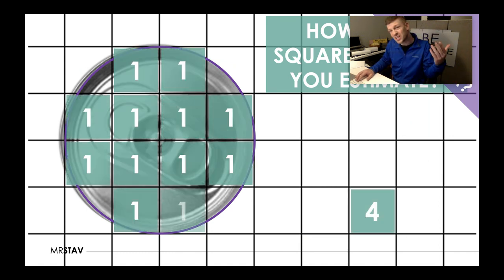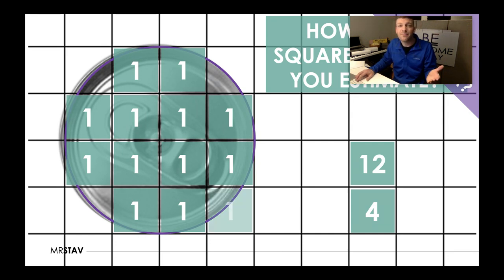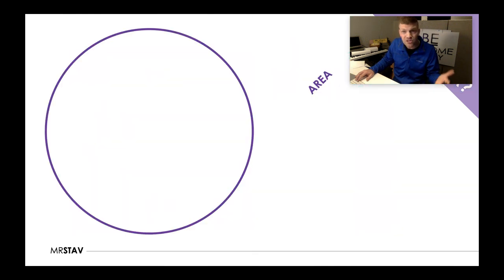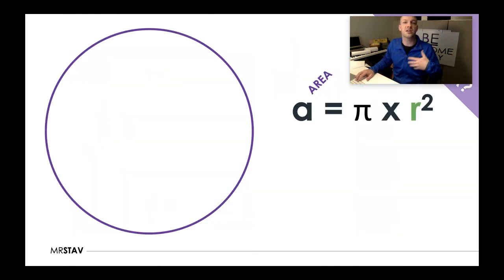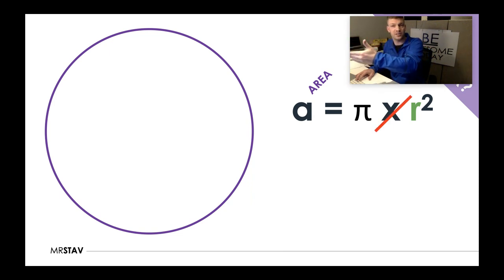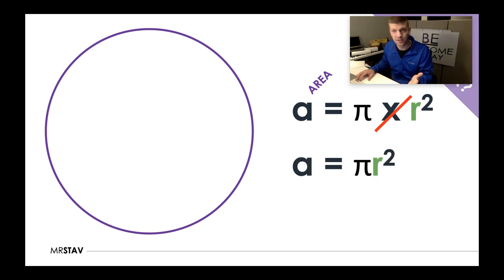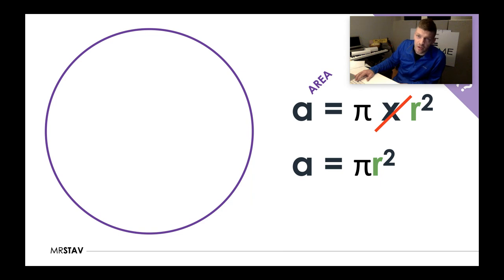We've learned about finding the area of a circle. We talked about how many square units fit, and we estimated. We talked about area equals pi times r squared, and then since we don't need that times sign, we just write pi r squared. Mr. Stav, I don't remember this! Well, you need to remember it right now.